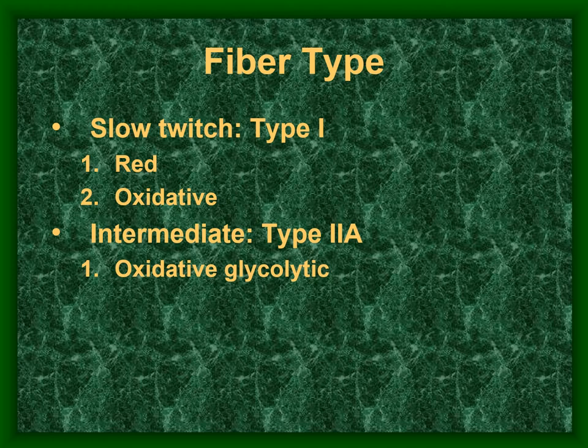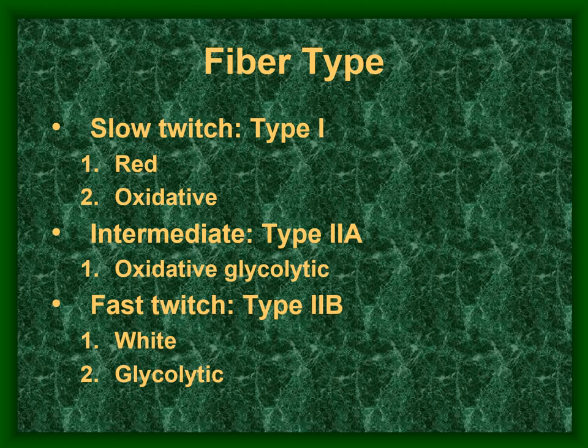Type 2a fibers are a hybrid between oxidative and glycolytic — intermediate in tension generation and endurance, with a moderate amount of mitochondria. Type 2b fibers have the least mitochondria but the highest fiber girth, generating by far the most tension.